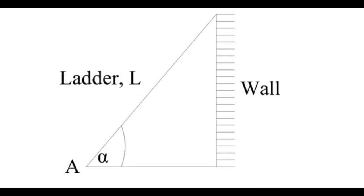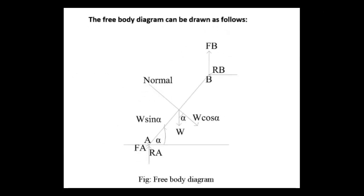We are given a ladder AB of length L resting against a wall. At the contact surfaces A and B, the coefficient of friction is given as 0.2. In the free body diagram, the weight W is acting vertically downward at the center span of the ladder.